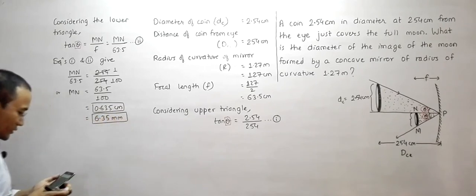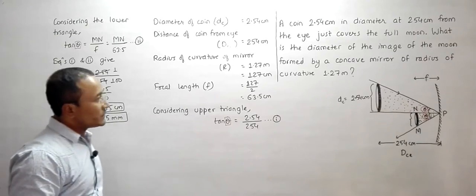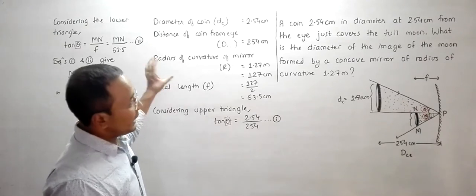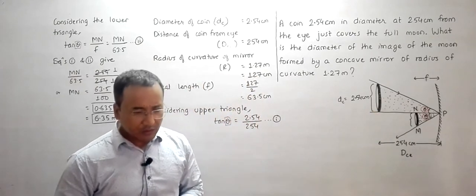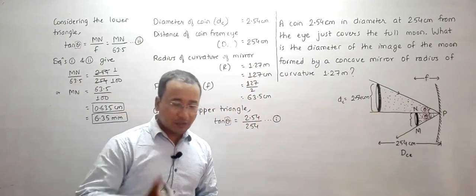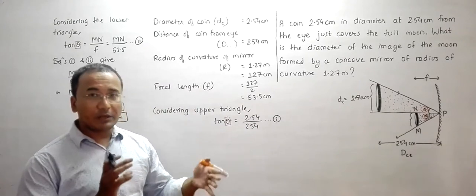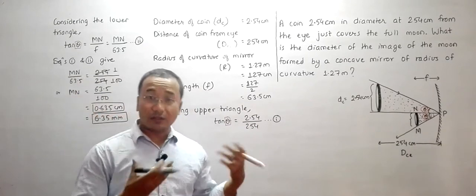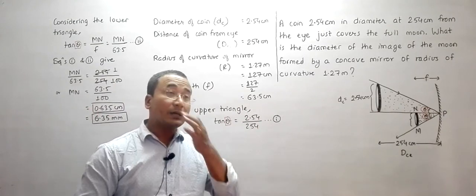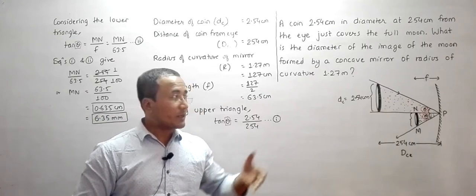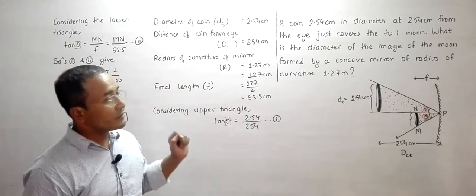This is actually a very small size, which is obvious because the moon is very far away and its image formed at the focus is tiny. In reality, you can observe this phenomenon by focusing the image of the moon or even the sun using a lens or mirror onto a screen, paper, or even a wall.